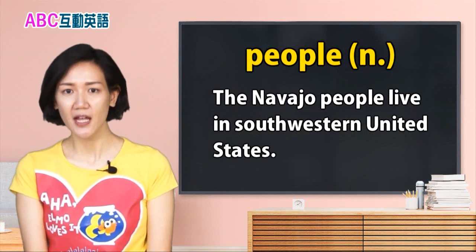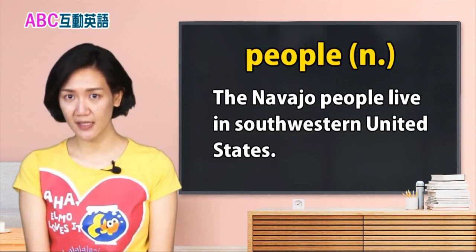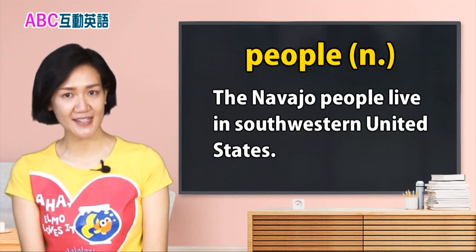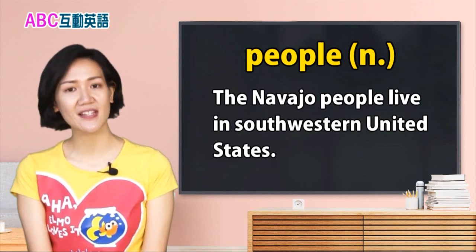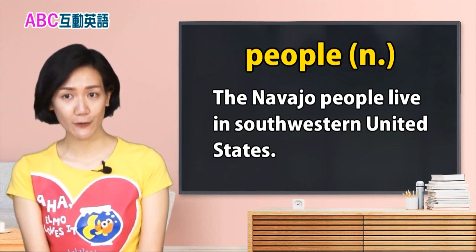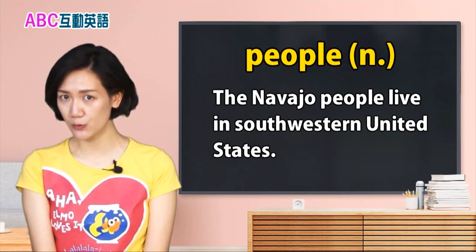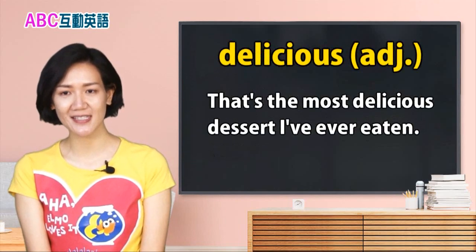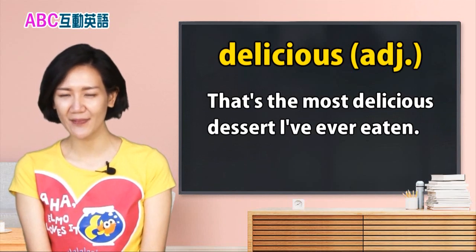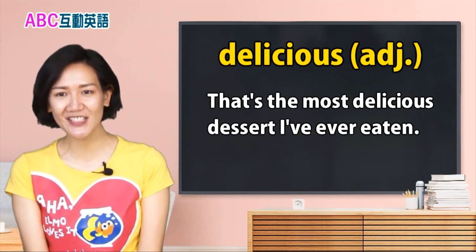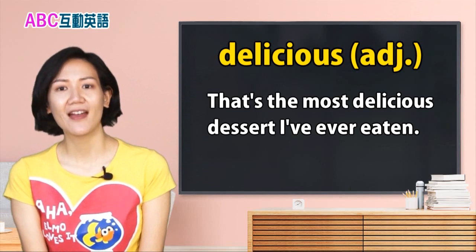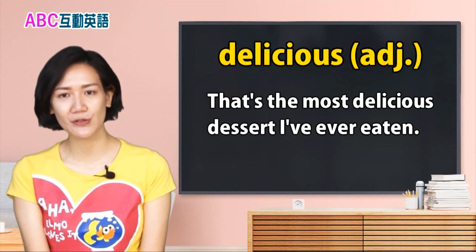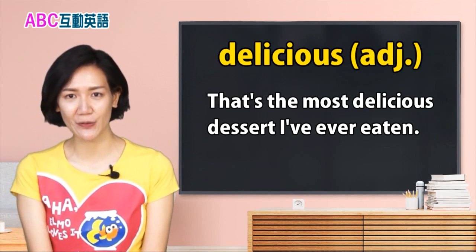People，民族，是个名词。这边不是指「人」的意思哦。比方说，the Navajo people live in southwestern United States. Navajo，奈瓦河族，也就是美国原住民，住在美国西南部。第四个单字：delicious，delicious，美味的，是个形容词。That's the most delicious dessert I've ever eaten. 那是我吃过最美味的甜点。好，我们现在一起看完单字。